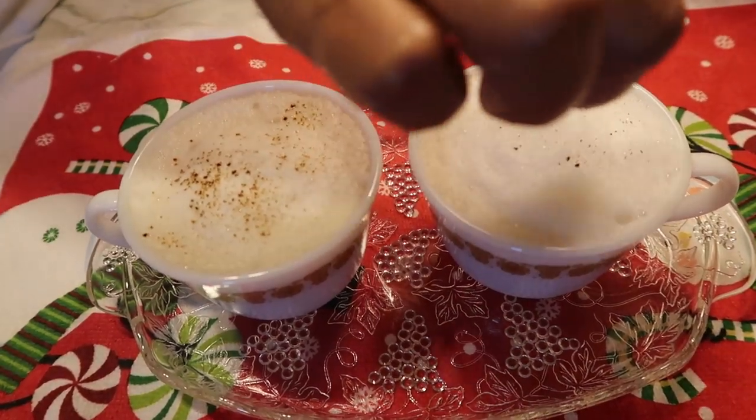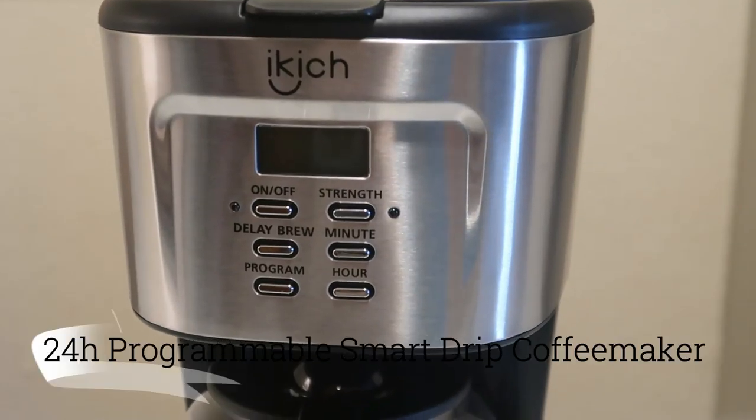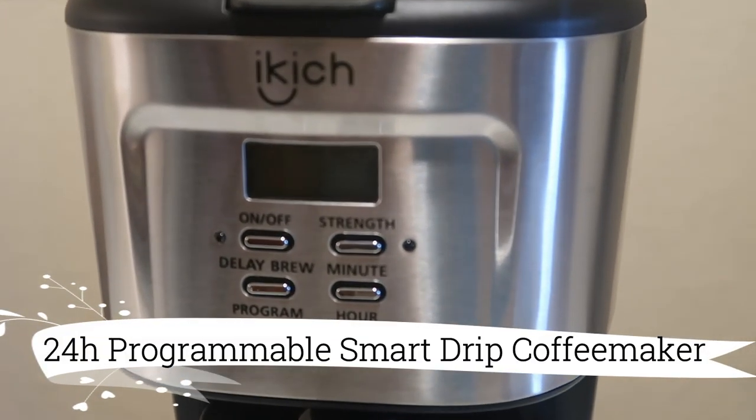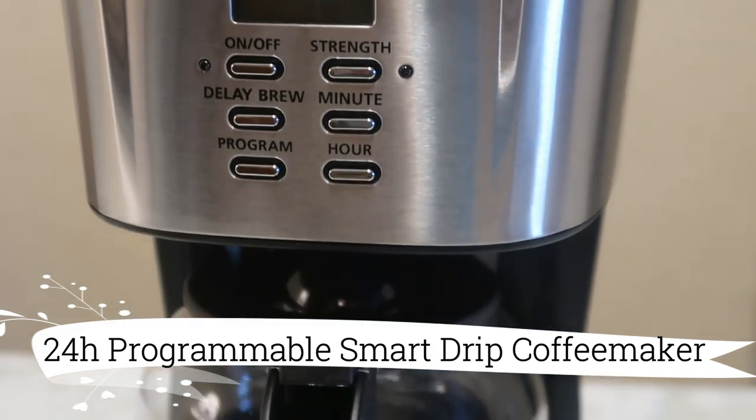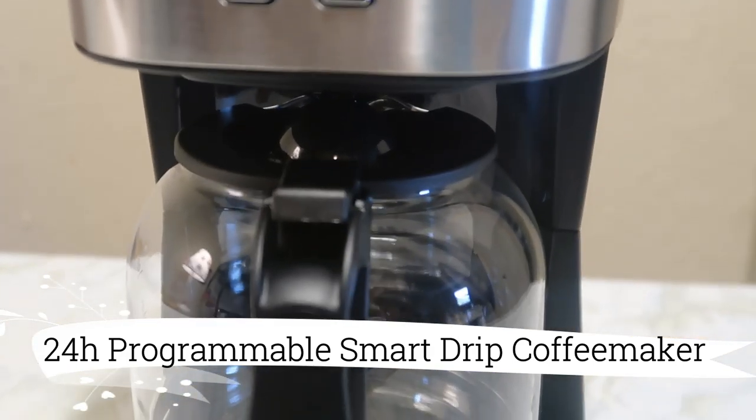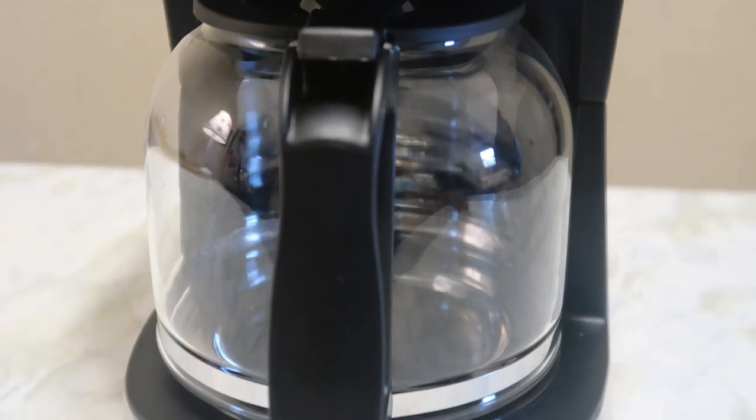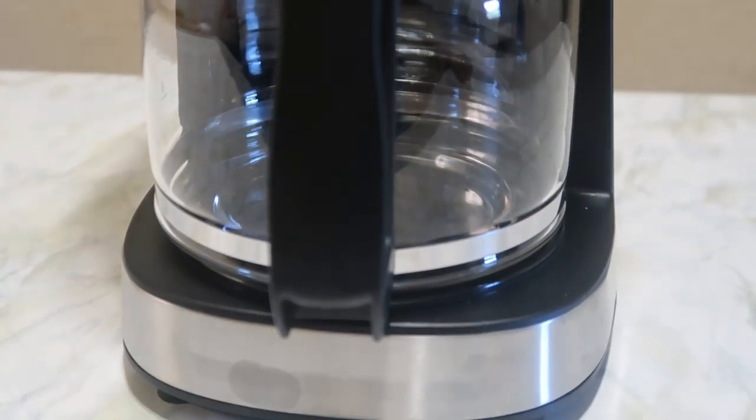So let's begin. IKICH drip coffee machine is a 24-hour programmable smart drip coffee maker which adopts advanced technology that ensures coffee brews quickly at the perfect temperature.